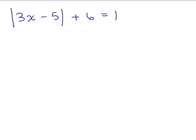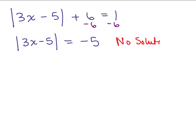Here's another example: absolute value of 3x minus 5, plus 6, equals 1. Step 1 is to isolate the absolute value part. Subtracting 6 from both sides gives the absolute value of 3x minus 5 equals negative 5. How can you have an absolute value equaling a negative number? You can't. So the answer is no solution — you cannot have an absolute value equaling a negative number.